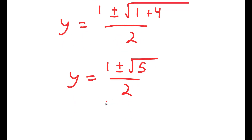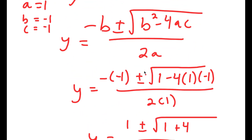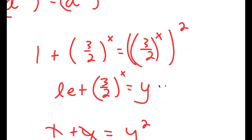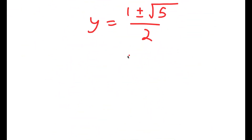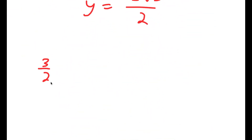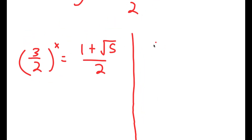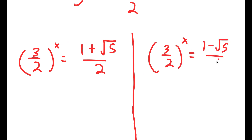So y equals 1 plus or minus the square root of 5 over 2. However, we're not done yet because we're not solving for y, we're solving for x. Remember we let 3 over 2 to the power of x equal y, so this gives two equations: 3 over 2 to the power of x equals 1 plus the square root of 5 over 2, as well as 3 over 2 to the power of x equals 1 minus the square root of 5 over 2.